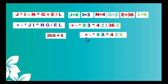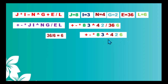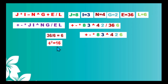Our prefix expression now is: addition operator, subtraction operator, multiplication operator, 8, 3, exponent symbol, 4, 2, and 6. We scan this new prefix expression from right to left again and look for the first operator. Scanning: 6, 2, 4, exponent symbol — this is our first operator. The immediate two operands to the right are 4 and 2. We perform exponentiation: 4 raised to the second power equals 16.